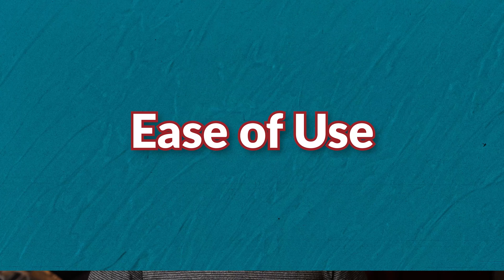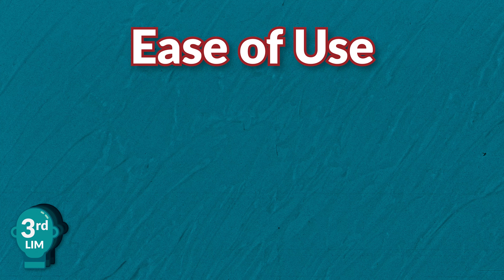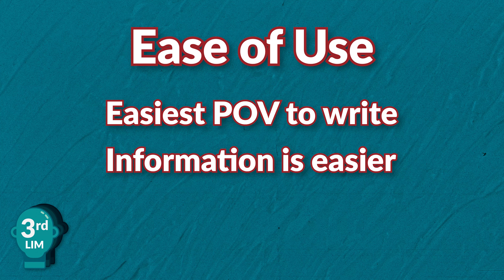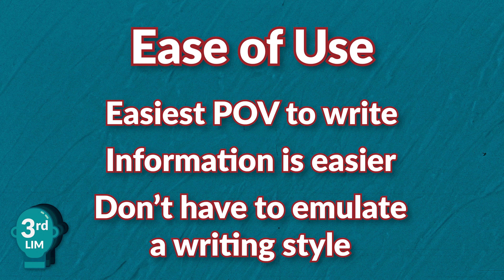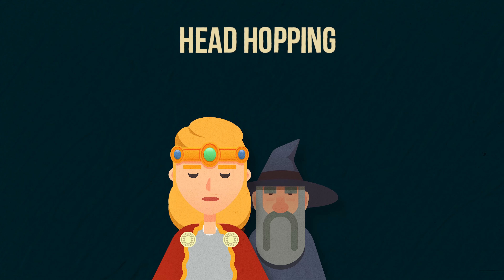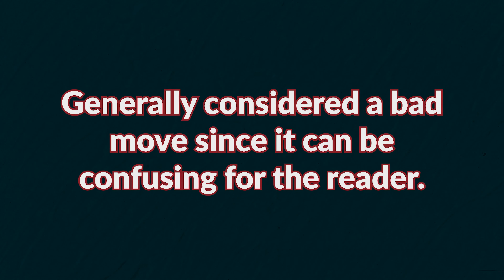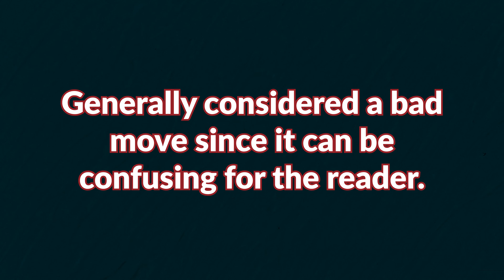In terms of ease of use, third person limited is by far the easiest POV to write. Information is easier to get across, and since you don't have to emulate the writing style of a character, you can basically write how you normally would. Your writing style will naturally remain the same, which makes the drafting process a lot easier. But there are some pitfalls with limited. The most common is head hopping, which is when you change POV characters in a single scene. It's generally considered a bad move since it can be confusing for the reader.